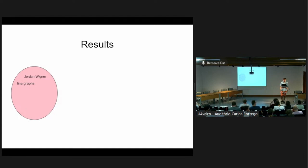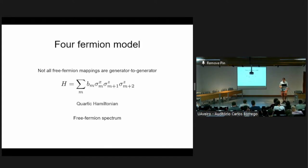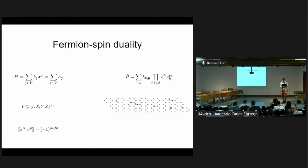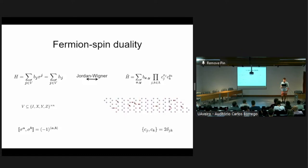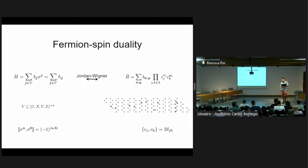Q: Are there examples of free fermion models not covered by your results? A: When I talk about free fermion models I mean models that are free for all values of the coupling coefficients B_J — generic, remaining free even if you perturb the couplings. There are examples where if you fine-tune the coupling coefficients you can find a free fermionic solution, but once you leave that narrow parameter set it's no longer free. Those fine-tuned cases are not captured by this framework.